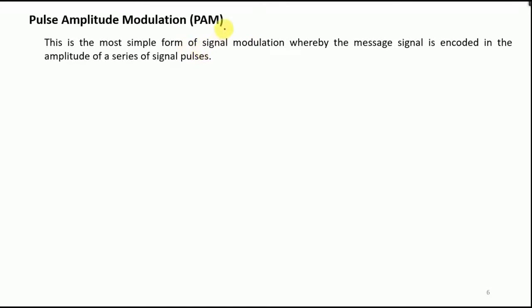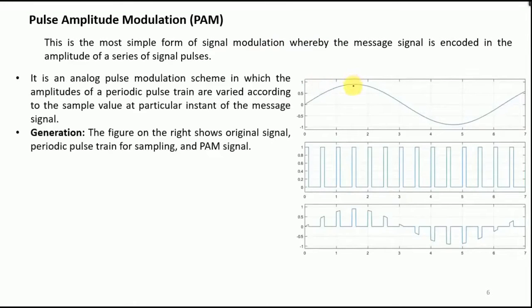Pulse amplitude modulation. This is the most simple form of signal modulation whereby the message signal is encoded in the amplitude of a series of signal pulses. I would explain this by means of one plot. Consider that this is our message signal M of T and this is PAM pulse, the modulated signal.